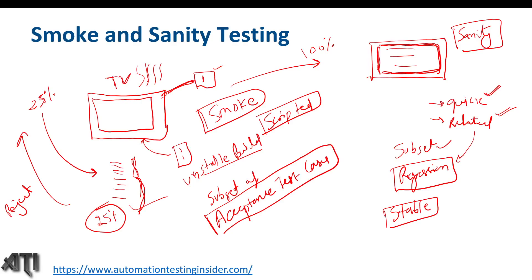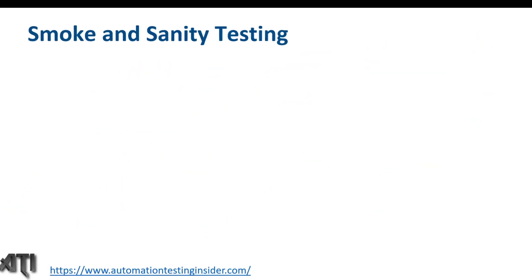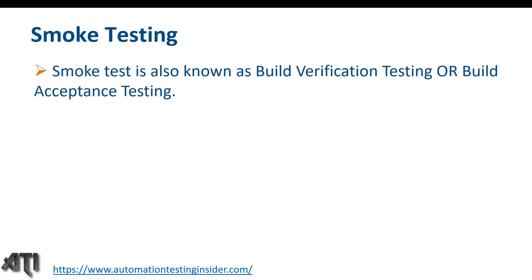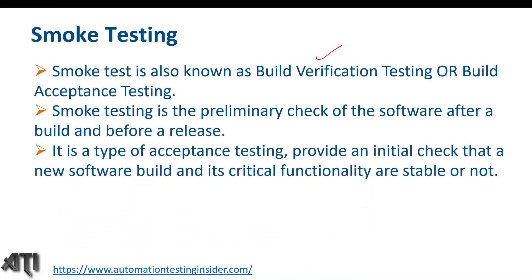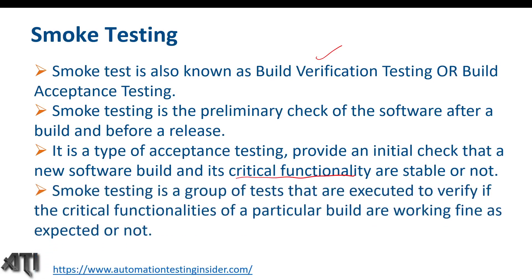So that covers smoke and sanity testing. From the next slide, let's talk more about smoke and sanity with some theoretical content. A smoke test is also known as build verification testing or build acceptance testing. Smoke testing is a preliminary check of the software after a build and before a release. It is a type of acceptance testing that provides an initial check of whether a new software build and its critical functionalities are stable or not.